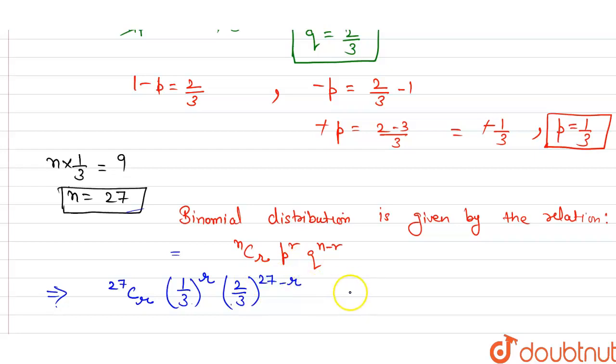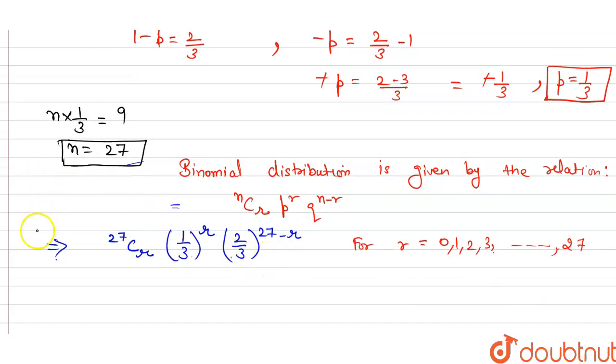up to 27 terms. So this is our binomial distribution. That's all.